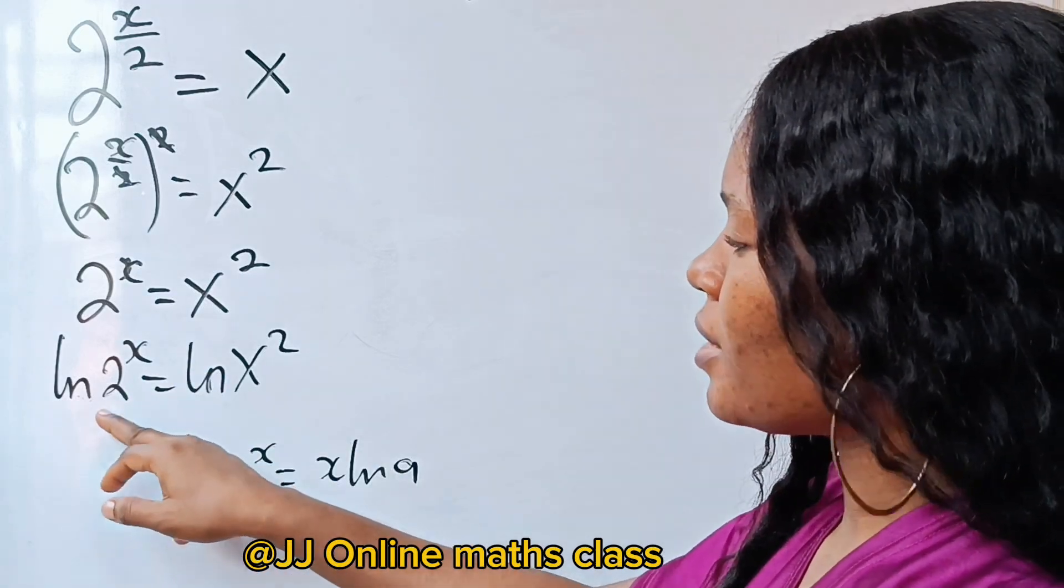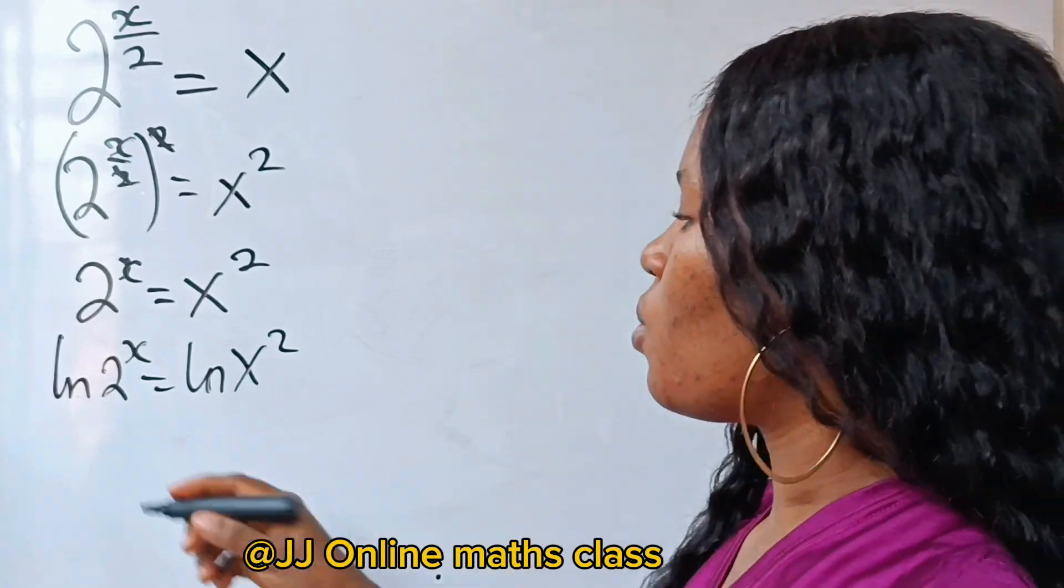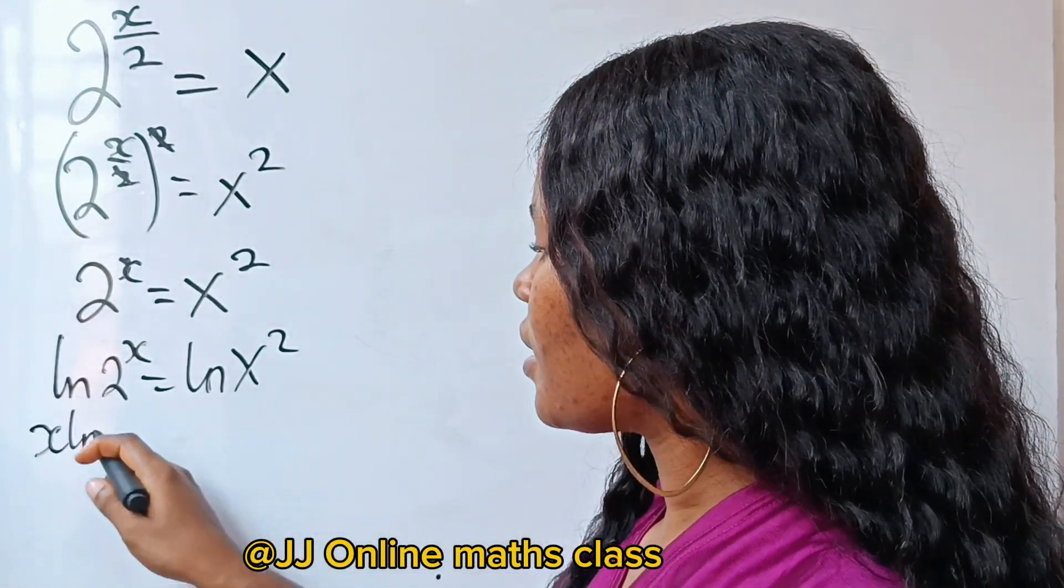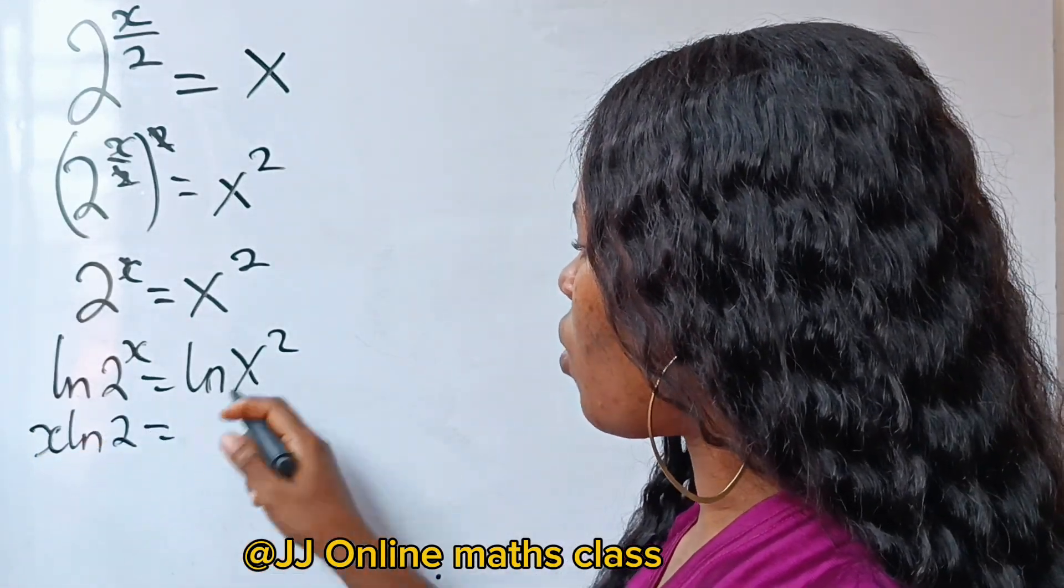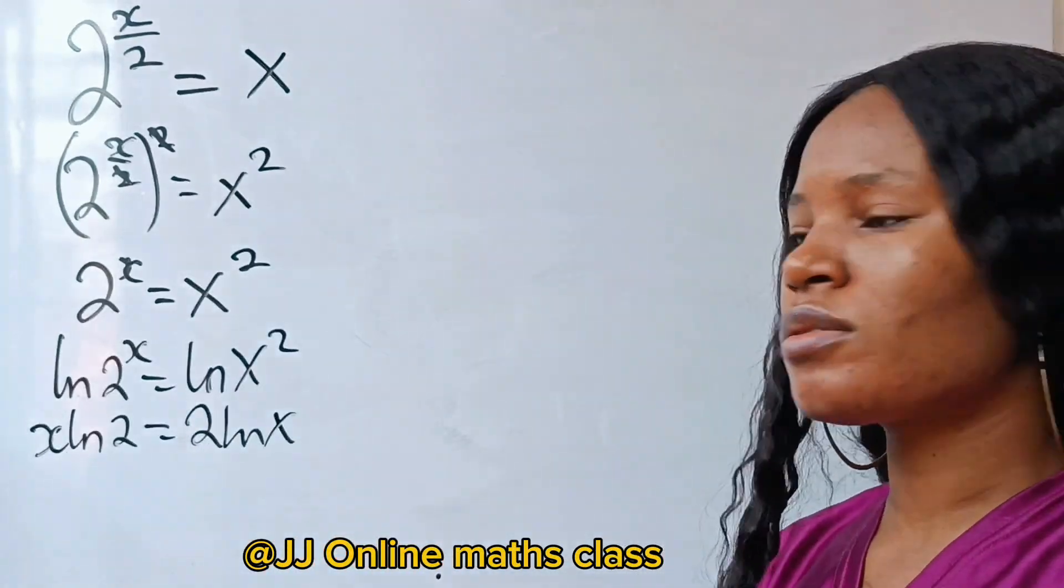So this x will come down to multiply your ln a. So we are going to apply this here and here as well. So if we do that, we will have x ln 2 is equal to 2 ln x.